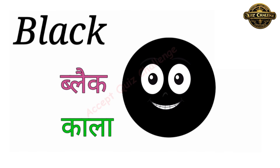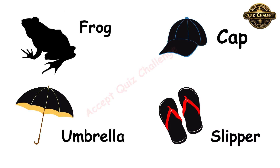This is the black color, B-L-A-C-K. Black means kaala. Let's see the example of black color. Frog is black, cap is black, umbrella is black and slipper also is black.